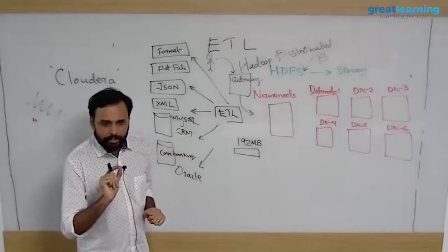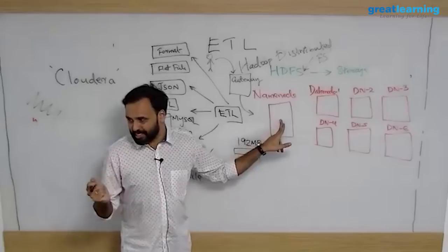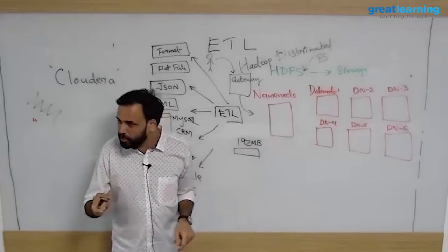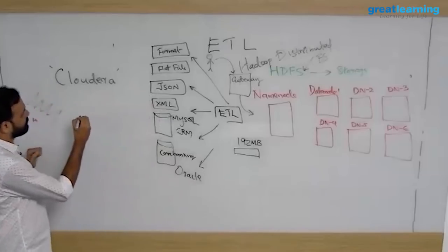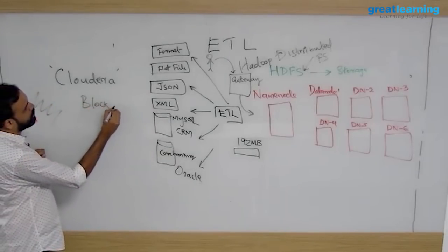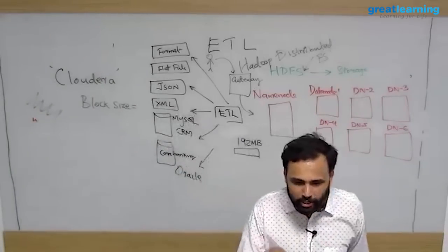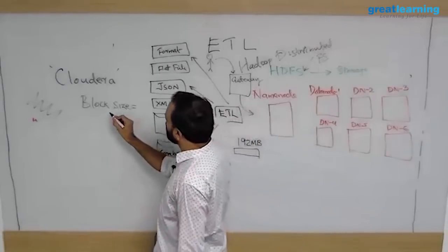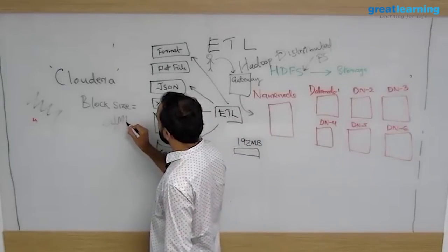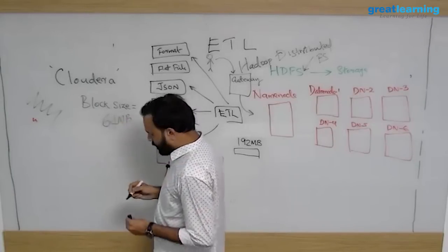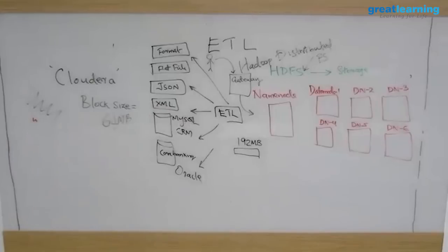What is going to happen is that first thing, your name node machine, this is a master, this guy will tell you something called block size. There is something called block size. This block size can be configured for every Hadoop cluster when you are installing Hadoop. I am assuming that the block size for this cluster is 64 megabytes. Block size will tell you what is the maximum size of data that you can store. If you are storing a 192 MB file, it will divide that into three blocks.